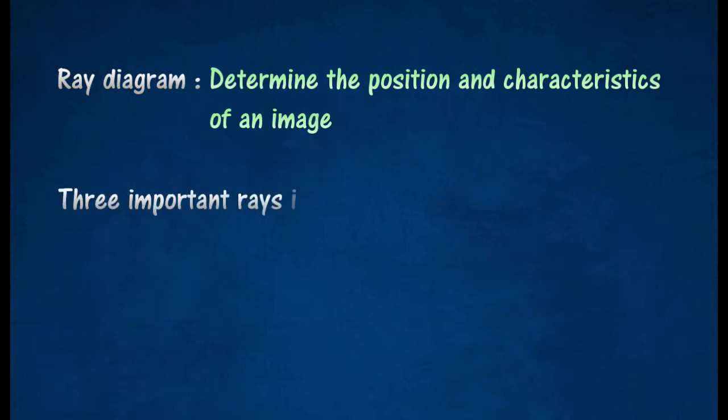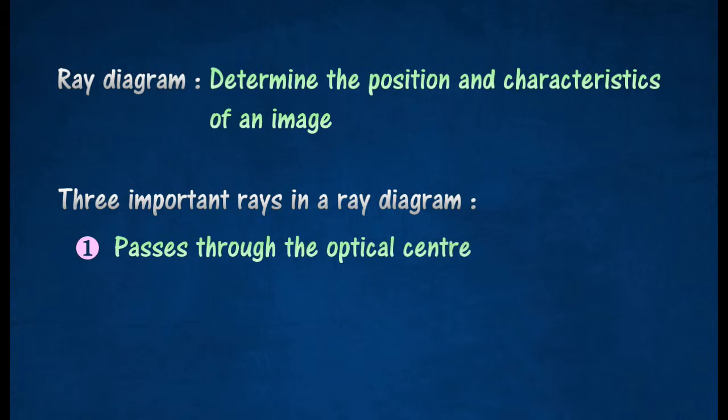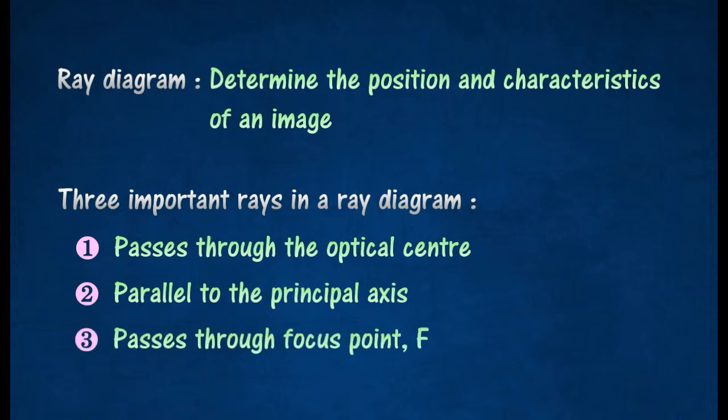There are three important rays to be drawn in a ray diagram. A ray of light passes through the optical center of the lens. A ray of light parallel to the principal axis. A ray of light which passes through focus point F.